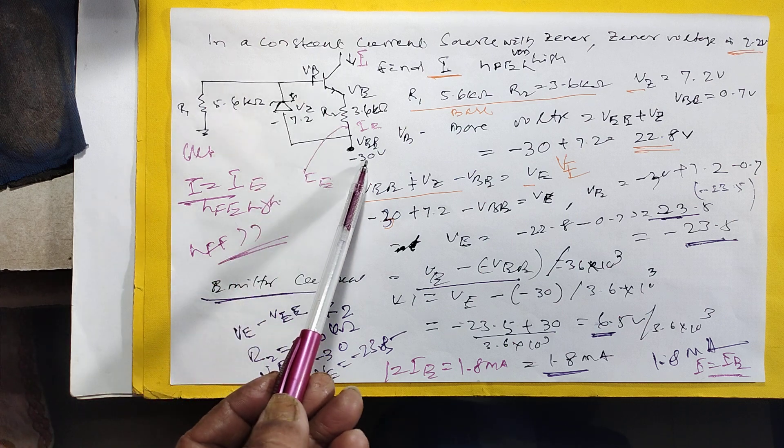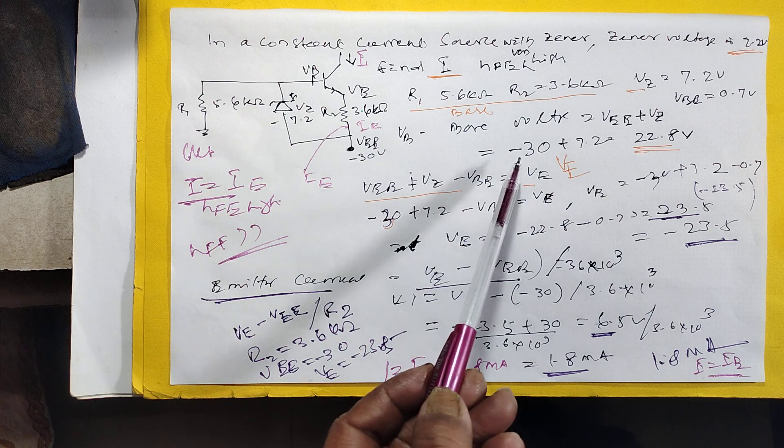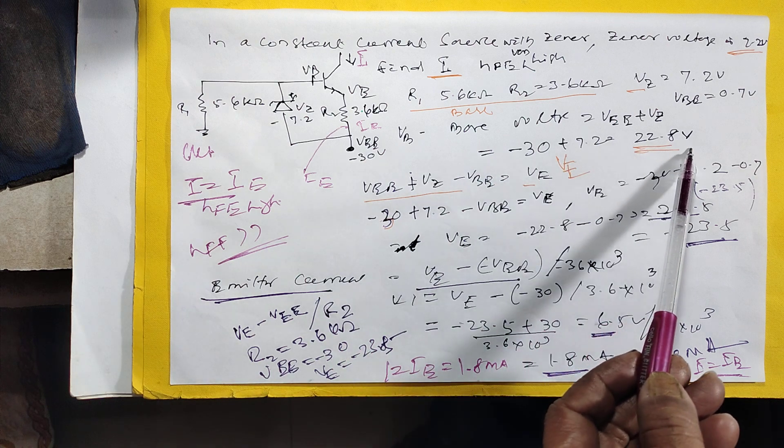So first we calculate what is the base voltage. This VB, VB is nothing but VE plus VZ, V minus 30 plus 7 volt equals minus 22.8 volt.